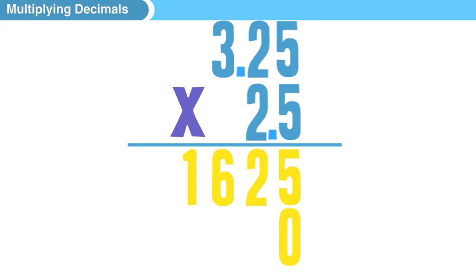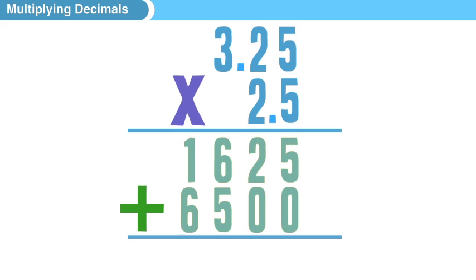And then we want to make sure and put a zero on the far right of our second line of products to make sure and hold that spot. And then we take the 2 in 2.5 and multiply it by each number in the top, and we get 6500 on that second line of products. Okay, then we just add straight down and we get 8125.